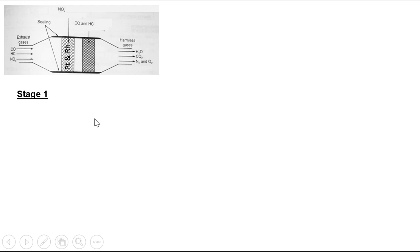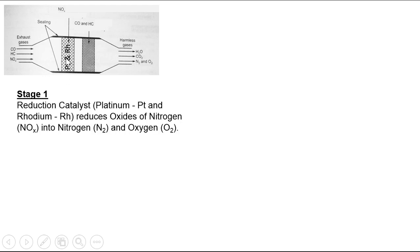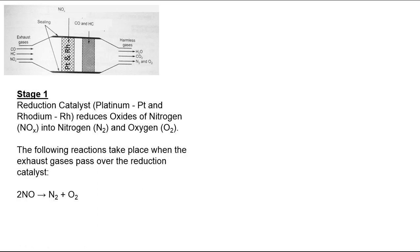In stage 1, the catalysts are platinum and rhodium, where reduction takes place. That is why they are called reduction catalysts. The reduction catalyst reduces oxides of nitrogen (NOx) into nitrogen and oxygen. The reaction: NO converts to N2 and O2, that is nitrogen and oxygen. Similarly, NO2 gets converted to N2 and O2. These are balanced reactions.